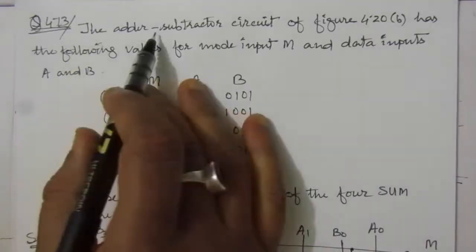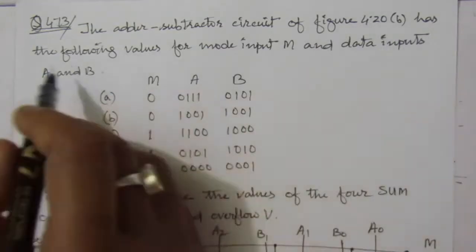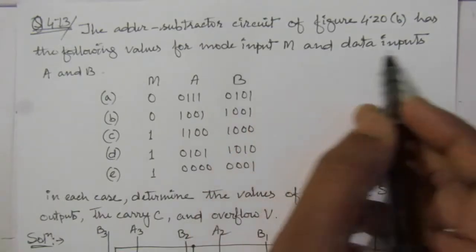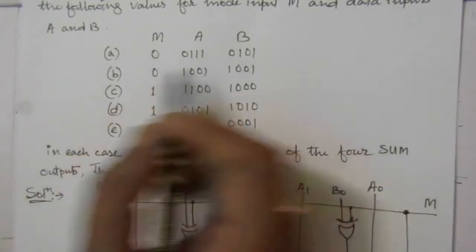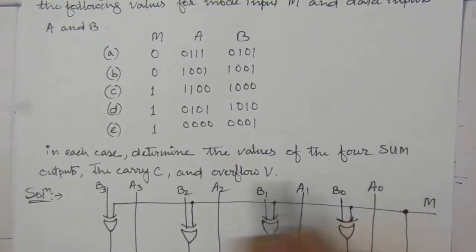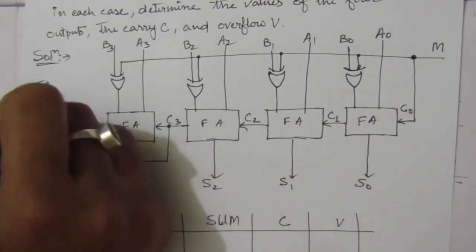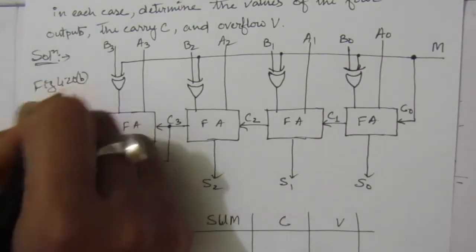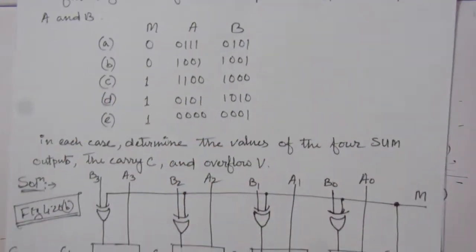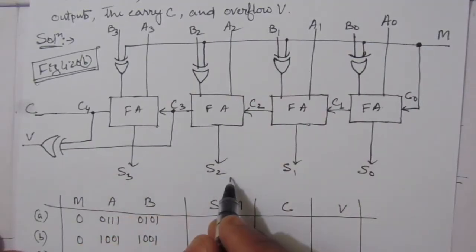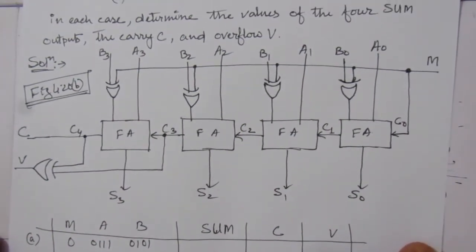The problem is the adder-subtractor circuit of figure 4.20b, which is inside chapter 4, and has the following values for mode input M and the data inputs A and B. For each of these five input cases, we have to determine the values of the four sum outputs, the carry output C, and the overflow output V.